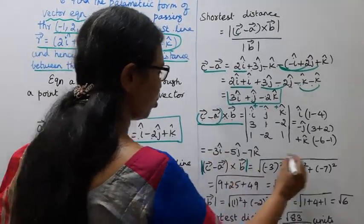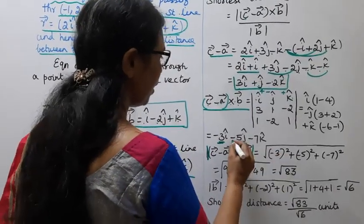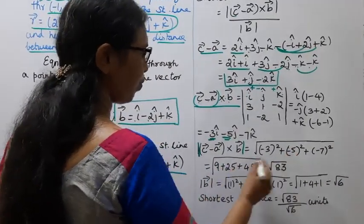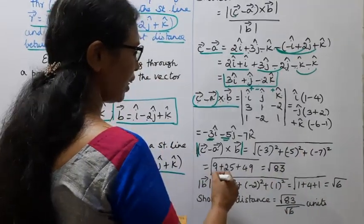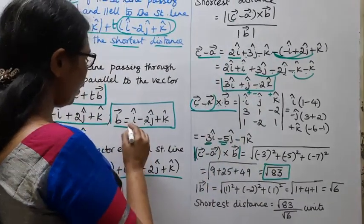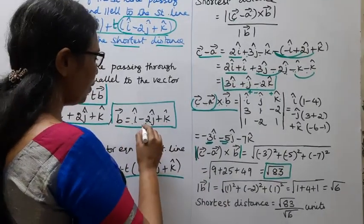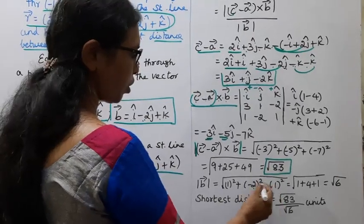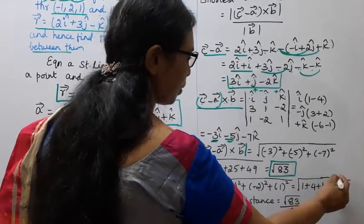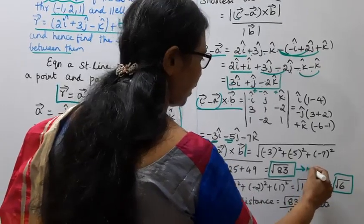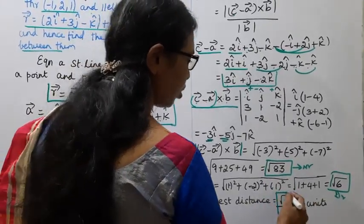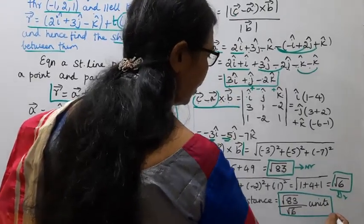Modulus of (c minus a) cross b vector: root of (minus 3 squared plus minus 5 squared plus minus 7 squared), that is root of (9 plus 25 plus 49) equals root of 83. Modulus of b vector: root of (1 squared plus minus 2 squared plus 1 squared) equals root of 6. Therefore, shortest distance equals root 83 divided by root 6 units.